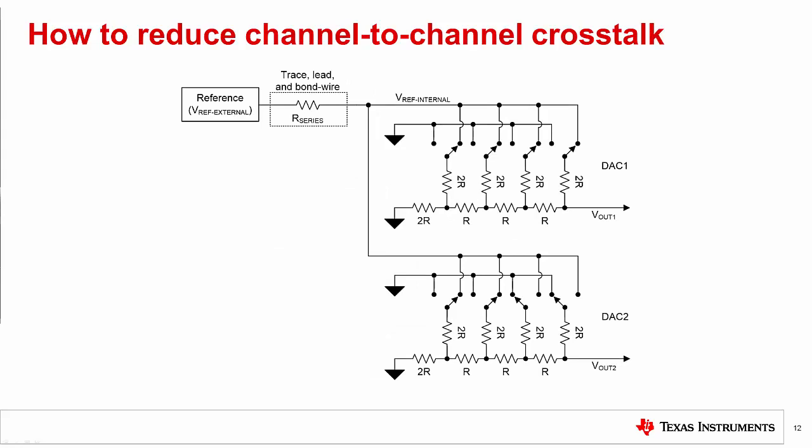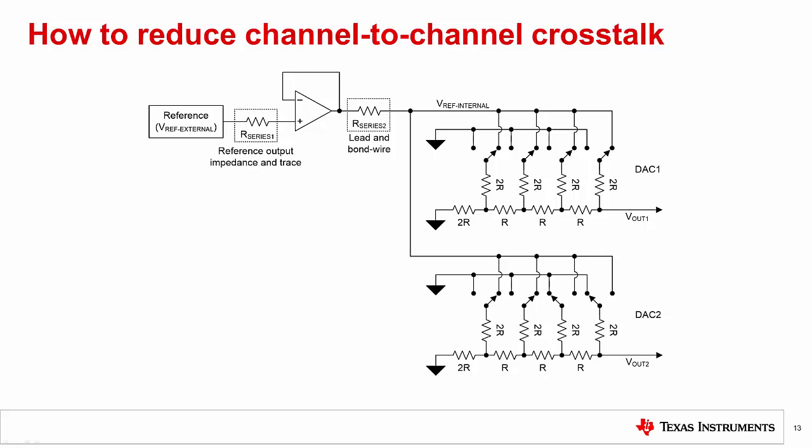Finally, for devices that use external references, reference loading can be reduced through a few different techniques. For example, Rseries can be reduced by ensuring that the trace from the reference is as short and direct as possible. For devices that do not have an internal reference buffer, an external reference buffer can be implemented that will isolate the reference source from the load current of the resistor ladder. This will help with AC crosstalk if the amplifier is faster settling than the reference itself. This is a very effective way of improving AC and DC channel-to-channel crosstalk.